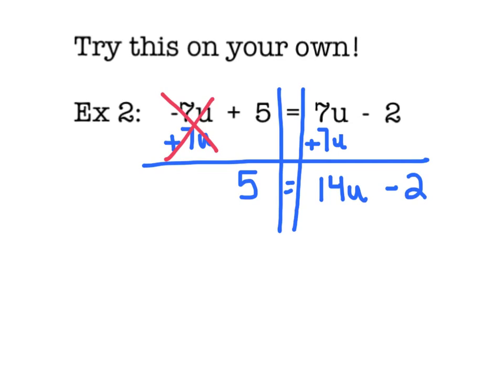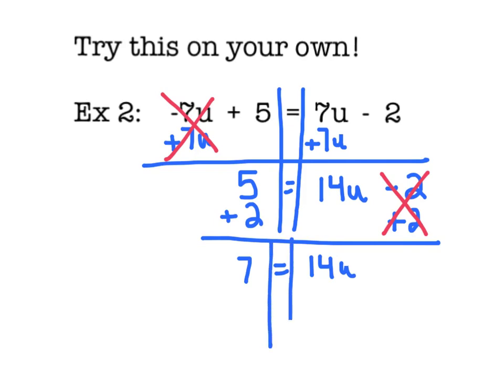Now I want to move all my constants to the other side, so they have to go to the left. That means I need to get rid of that minus 2, so his inverse is plus 2. When that happens on both sides, my minus 2 plus 2 are inverse and cancel each other out. And what I now have is 7 is equal to 14u. Remember we still want to get our u by itself, so I'm going to divide by 14 on both sides. These inverse cancel out, and I get u by itself, and 7 divided by 14 is equal to 1 half. Some of you may have written that as 0.5, which is the same thing. Either way, we're done.